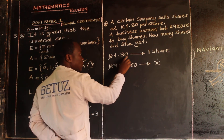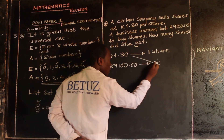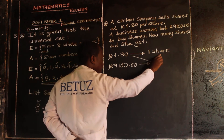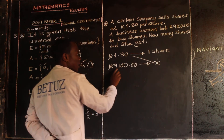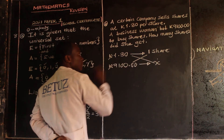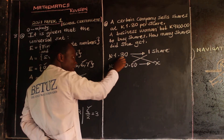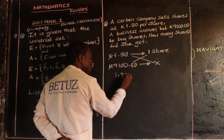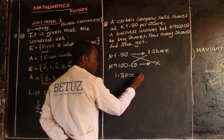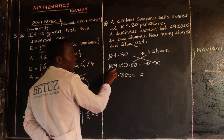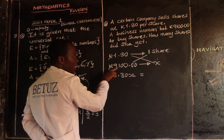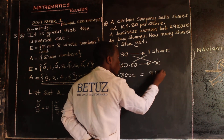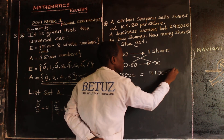We are going to say 1.30 times x equals one share multiplied by 9,100. So 1.30x is equal to 9,100.